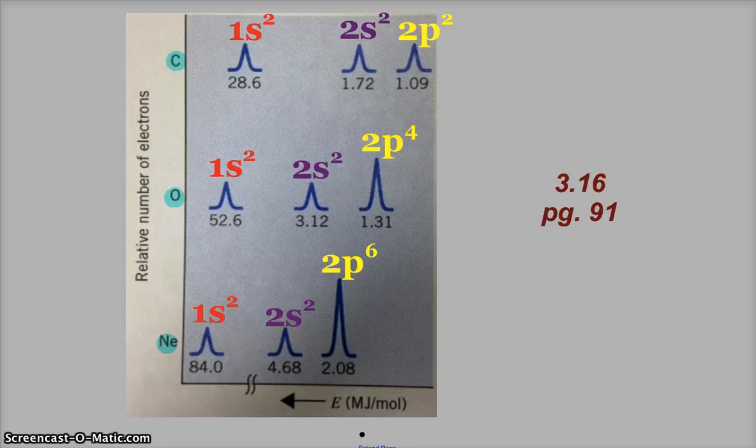And what we're going to realize here, or if you haven't already, that each peak represents an energy level. More specifically, a sub-level, a sub-shell. And so for oxygen, we see the first two peaks are the same, but the third peak is twice as high. So that peak represents twice as many electrons. For neon, the third peak is three times as high. So that's three times as many electrons.